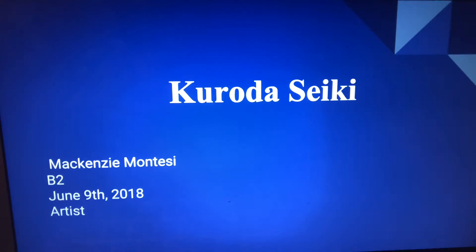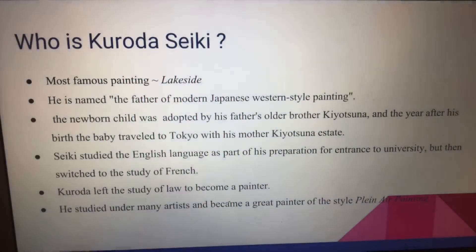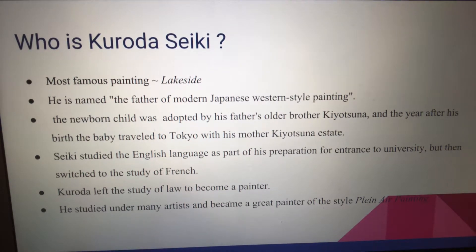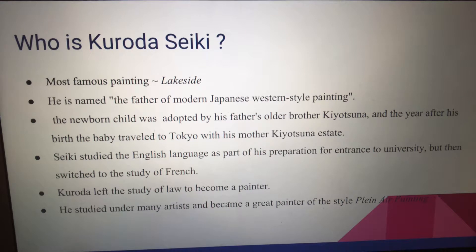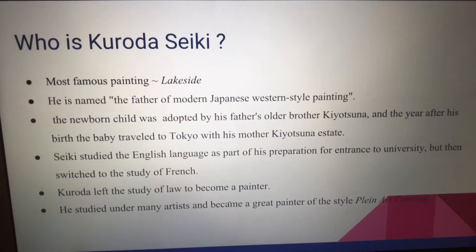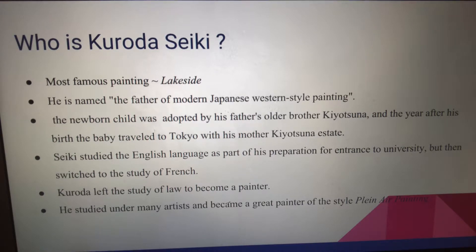I did my presentation on Kurodo Seiki. He was an artist. His most famous painting is Lakeside, which I show later. One of his known names is the father of modern Japanese and Western style painting. As a newborn child, he was adopted by his father's older brother, and he ended up traveling as a baby with his mother to her estate in Tokyo, where he studied for university. He studied the English language as preparation for university, but he switched to French because he ended up going to Paris.